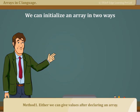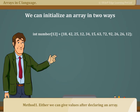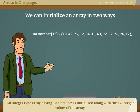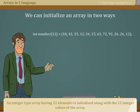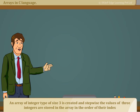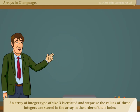Method 1: Either, we can give values after declaring an array. An integer type array having 12 elements is initialized along with the 12 integer values of the array. An array of integer type of size 3 is created and stepwise the values of three integers are stored in the array in the order of their index.